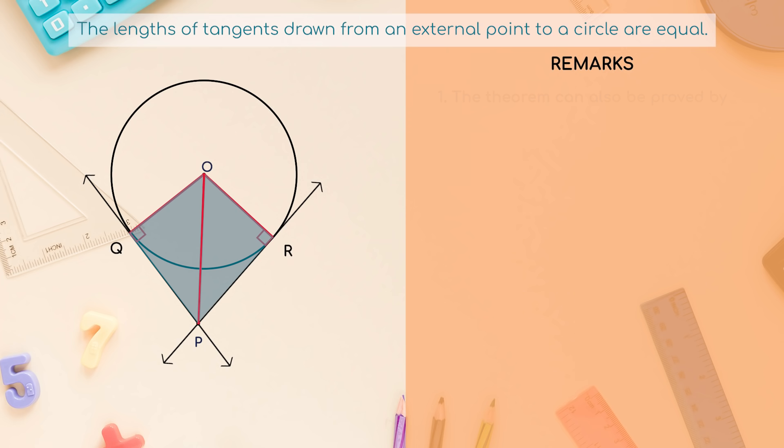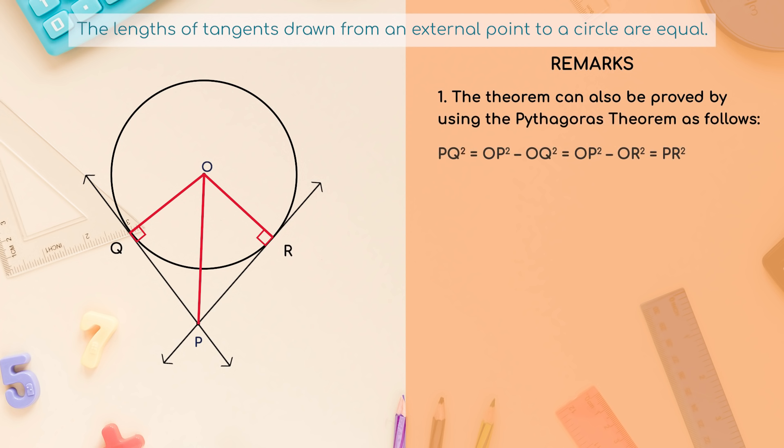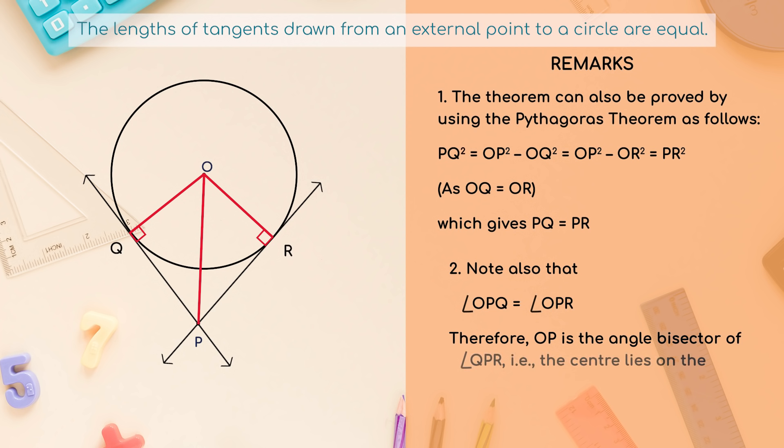Remarks: 1. The theorem can also be proved by using the Pythagoras theorem as follows: PQ² = OP² - OQ² = OP² - OR² = PR² (as OQ = OR), which gives PQ = PR. 2. Note also that angle OPQ equals angle OPR. Therefore, OP is the angle bisector of angle QPR, that is, the center lies on the bisector of the angle between the two tangents.